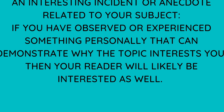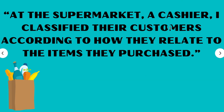An interesting incident or anecdote related to your subject works well if you have observed or experienced something personally that demonstrates why the topic interests you — your reader will likely be interested as well. Just do not use the word 'I' unless you are doing a personal narrative. For example: 'At the supermarket, a cashier classified customers according to how they related to the items they purchased.' We don't ever want to use the first person unless it's a personal narrative.